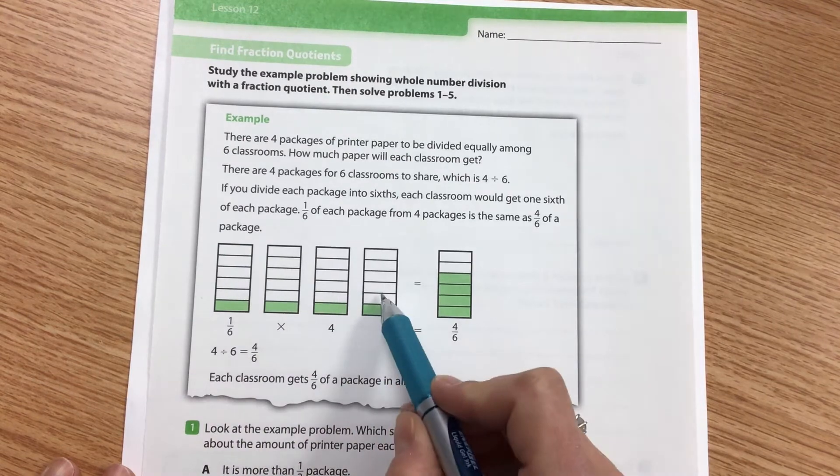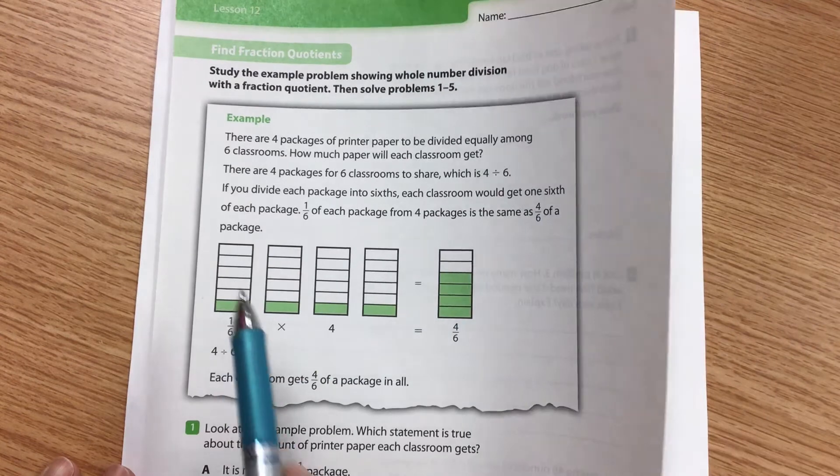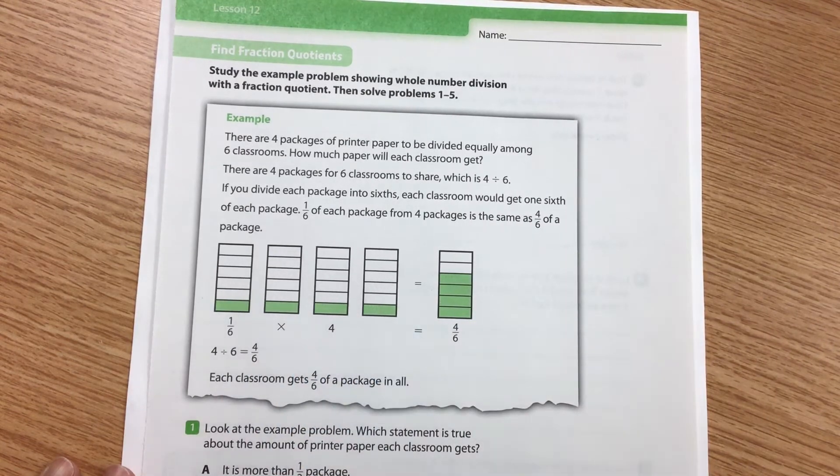One, two, three, four packages of paper and they've split it into six. So they have that as four divided by six.